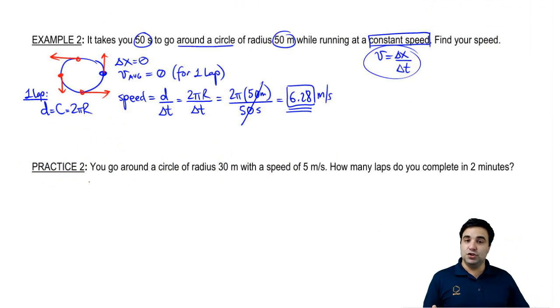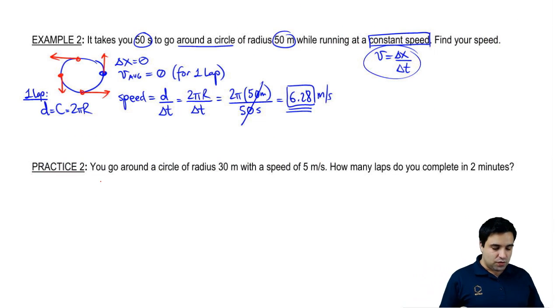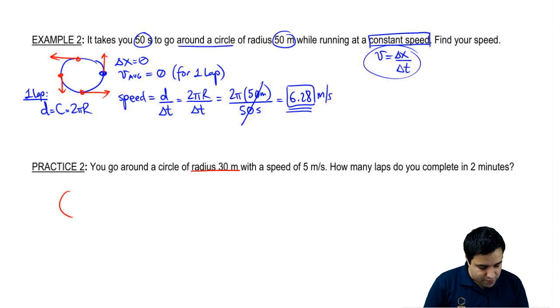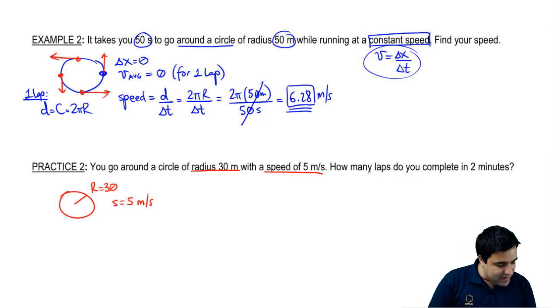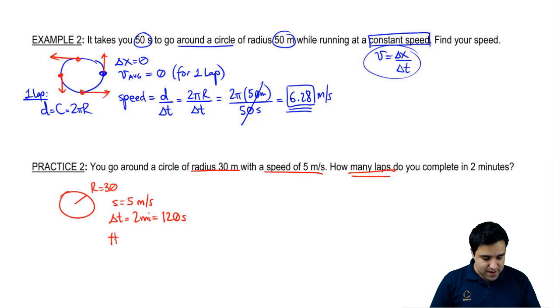Cool. I want you guys to try practice two. It's also using circular motion. So you're going in a circle. But it's asking for something a little bit different. So you should pause the video. Give it a shot. Hopefully you get it. I'm going to jump into it. You have a circle of radius 30. And you move around it with a speed. I'm going to put S equals 5. And then it's asking how many laps do you complete in 2 minutes? So for a delta T of 2 minutes, which obviously that's 120 seconds, it wants to know how many laps.